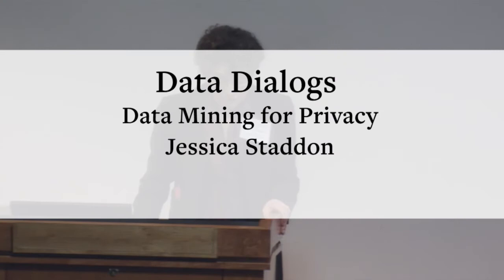Jessica Stadden is a research scientist and privacy product lead at Google. She works on leveraging data for better security and privacy. Her interests include usability of security and privacy technology, trends in privacy-related attitudes, and methods for measuring and predicting privacy-related behaviors, attitudes, and risks. Prior to Google, she worked at Xerox PARC, Bell Labs, and RSA Labs. Jessica holds a PhD in mathematics from UC Berkeley.